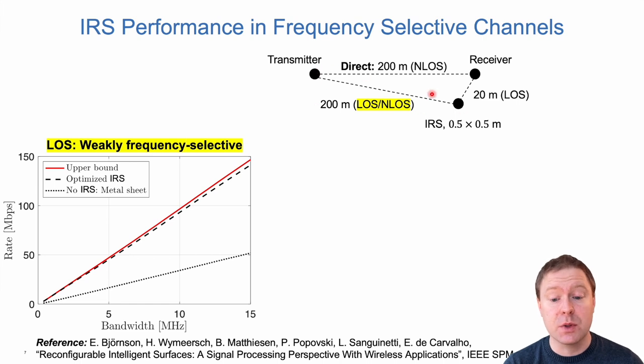If we consider the case when we have line of sight from the transmitter to IRS, then here I'm showing the rate over the bandwidth. If I increase the bandwidth, you see that the rate is going up. There are three different curves. The upper one, the red one, is when we can on every subcarrier change the IRS configuration as we like, which isn't really possible because we need to have the same phase shift on all subcarriers. But then we get the red curve. If we have a more realistic case where we need to only pick one configuration at a time, we are taking the signal from the transmitter through the line of sight and reflect it towards the receiver. Then we get the black dashed line. We see that they are roughly the same, so we can get really good performance. If we change the IRS to a metal plate, we get much lower performance. So it's really important to have this intelligent reflecting surface.